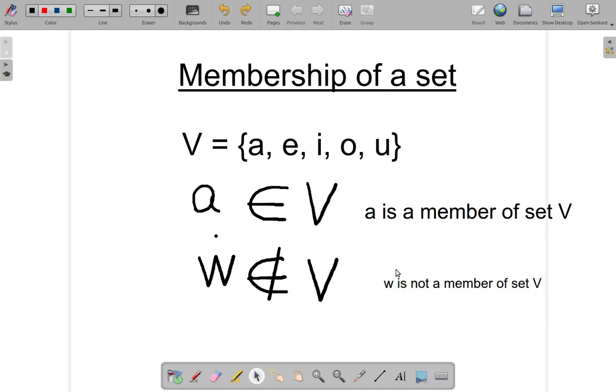So, A is a member of set V, but here W is not a member of set V. These are the symbols that you use to indicate membership of a set.